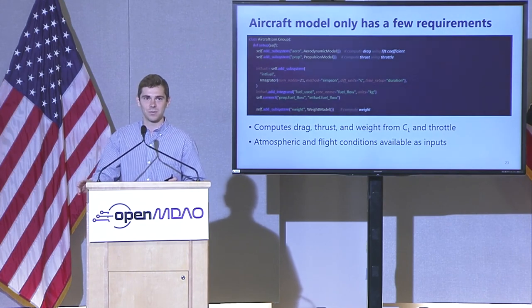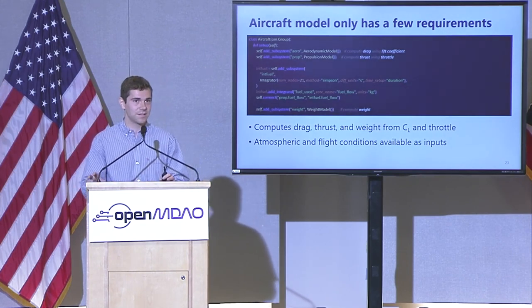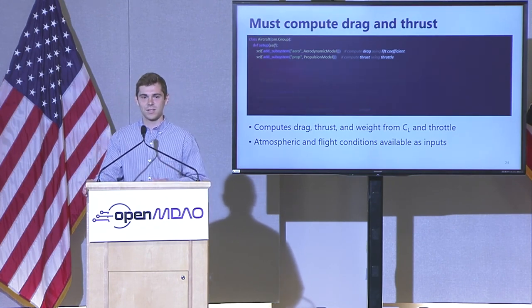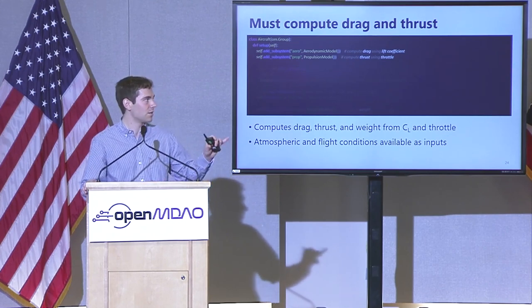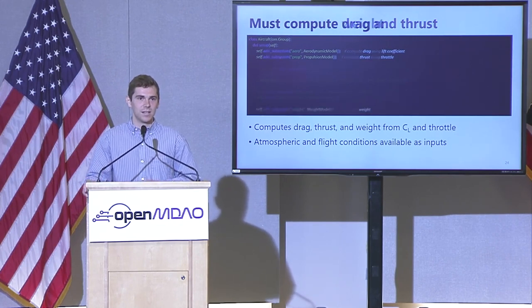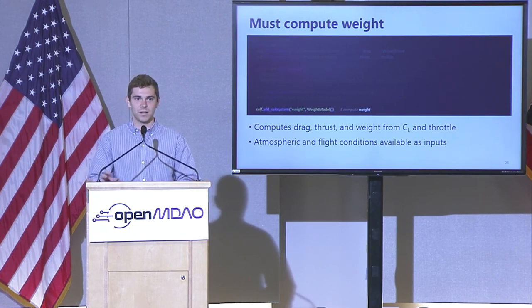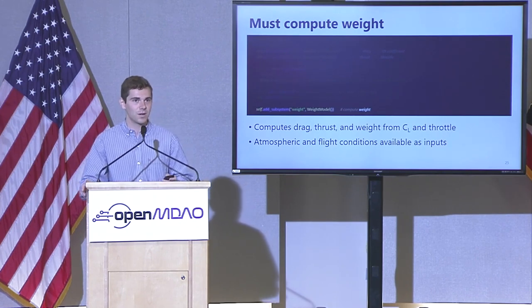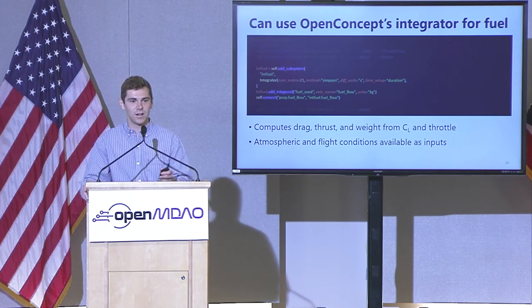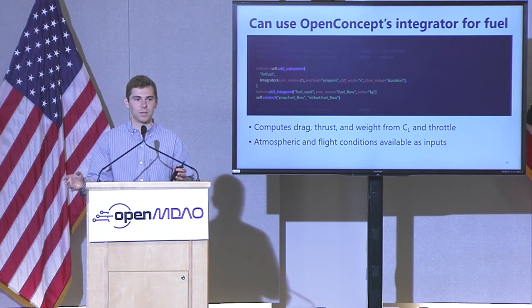The aircraft model really only has a few requirements — it ends up being an OpenMDAO group. The only requirements are you need to compute drag and thrust as outputs, taking in lift coefficient and throttle. These aerodynamic and propulsion models are kind of placeholders — the only other requirement is you need to output weight. Other than that, you can do whatever you want in this group. We end up assembling all sorts of thermal models and different propulsion systems. One thing you might want to do is integrate fuel burn — you can use the OpenConcept integrator to integrate the fuel flow from the propulsion model and get fuel burn at the end.